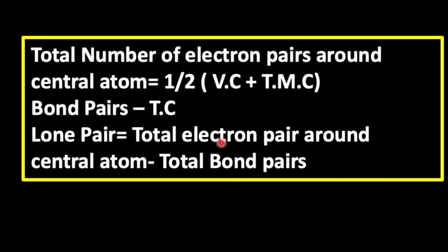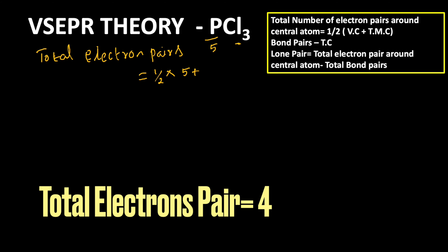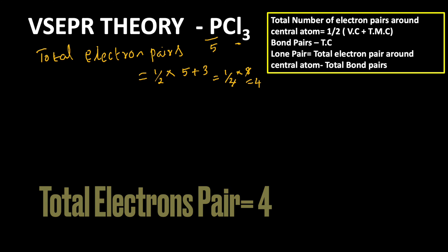Let us find out the total number of electron pairs around phosphorus. Total electron pairs = ½ × (Vc + Tmc). Phosphorus has atomic number 15, so it has 5 valence electrons. There are 3 chlorine atoms attached. So, ½ × (5 + 3) = ½ × 8 = 4. The total number of electron pairs around phosphorus is 4.